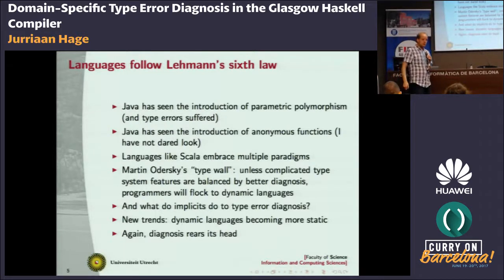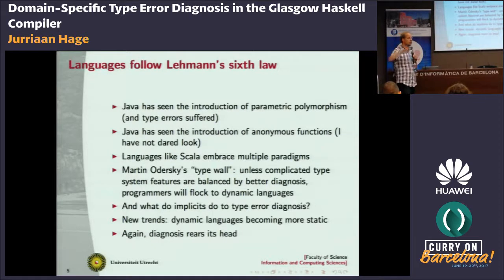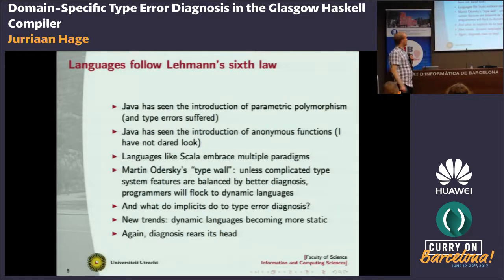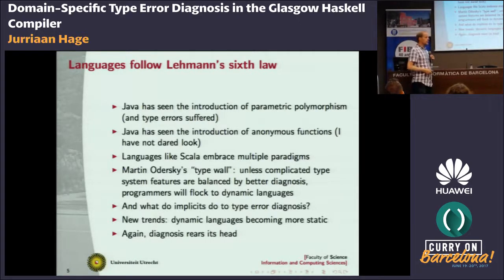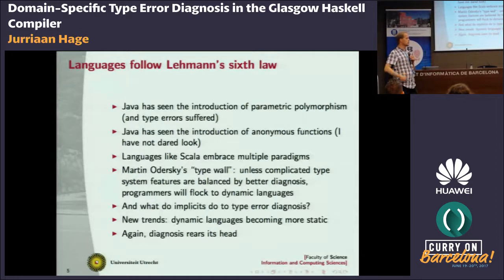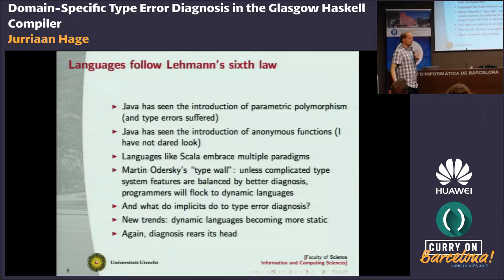It's a problem in functional programming, but not just there, because languages grow. All languages start to support functional stuff because of parallelism. Java saw the introduction of parametric polymorphism — well, error diagnosis suffered. Then they introduced anonymous functions, and I have not dared to look. Languages like Scala embrace multiple paradigms. The Scala type system is quite complicated; local type inference is much more complicated to understand and diagnose than the Hindley-Milner algorithm that Haskell uses. Particularly, parametric polymorphism and subtyping bite each other quite often.